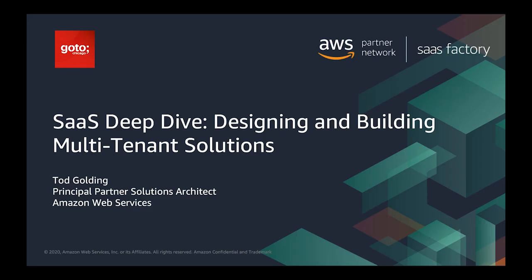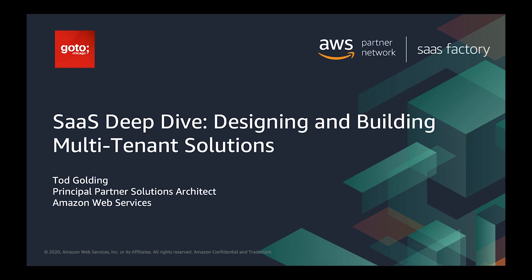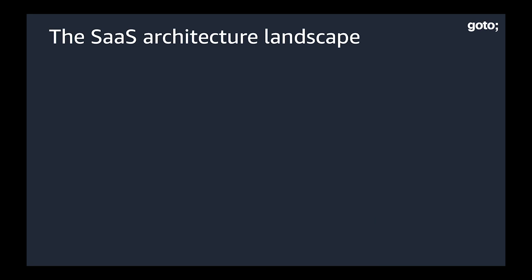As we launch into this and start to look at what we're going to cover, we're really going to start at the outside and work our way in, walking end to end through this experience. What I've done here as a starting point is try to create some view of what I think the high-level landscape of a SaaS architecture looks like and really call out some of those core building blocks, knowing that we're maybe oversimplifying a little bit here.